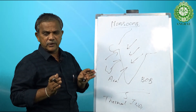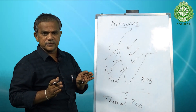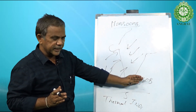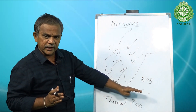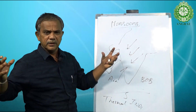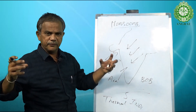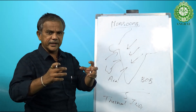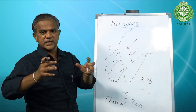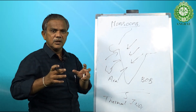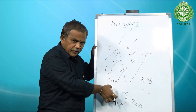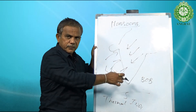The term doldrums refers to the region approximately 5 degrees to either side of the equator, because it is an area of almost calm wind. The winds from the two directions deflect each other, resulting in no significant displacement of wind — that is what we call the doldrums.